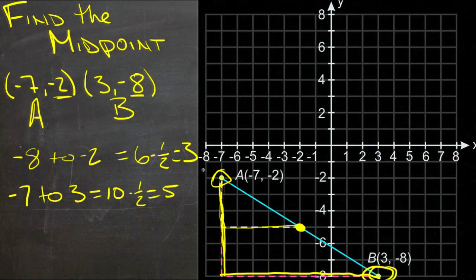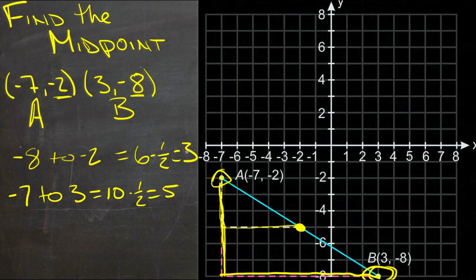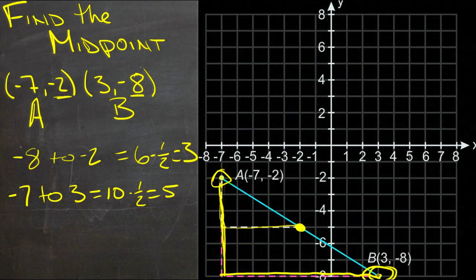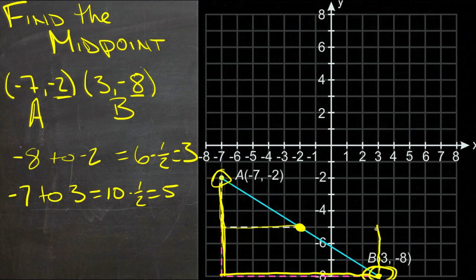So what we really need to do is go down 3 or up 3, and then over 5. So if we're starting here and we want to go halfway, we'll go up 3, 1, 2, 3, and back 5, 1, 2, 3, 4, 5, and that gets us to the midpoint.